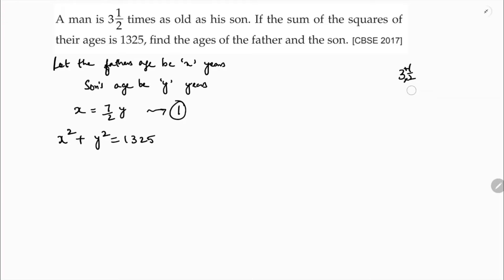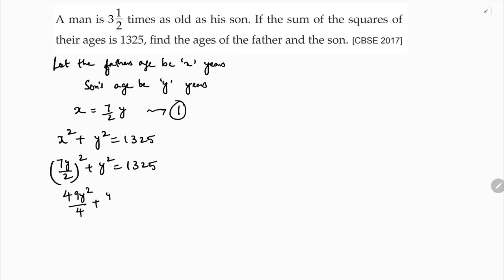So 1325. Now, in place of X I will substitute 7Y by 2. So 7Y by 2 whole square plus Y squared is 1325. 7 squared is 49, so 49Y squared by 4 plus Y squared equals 1325.